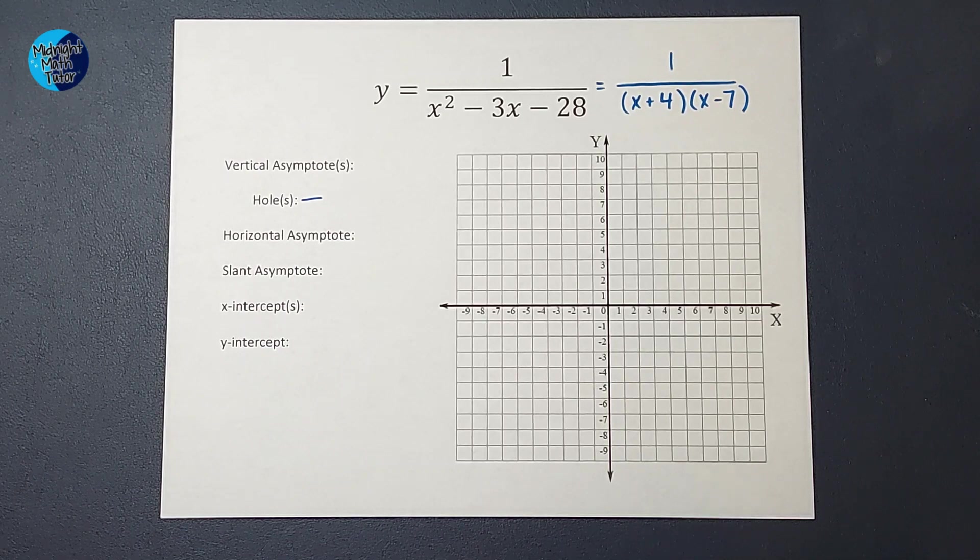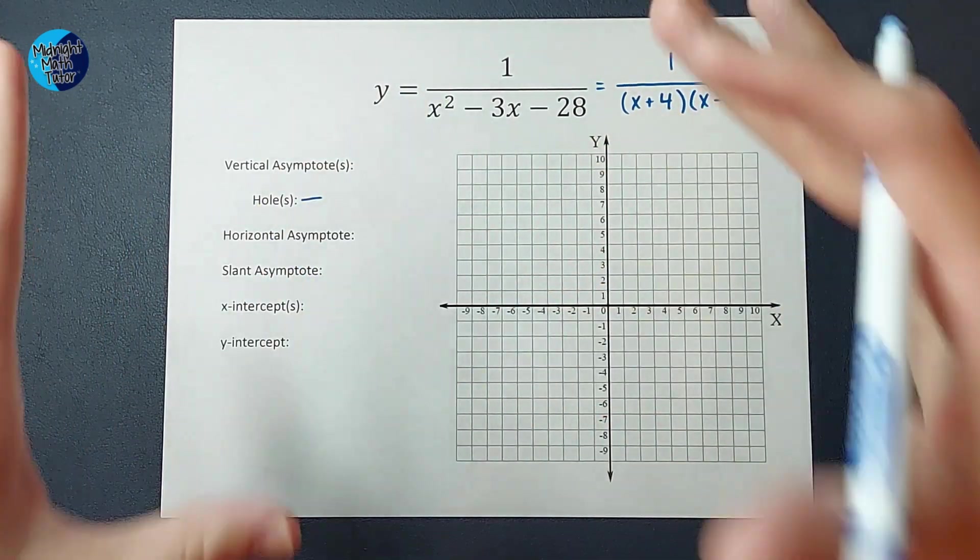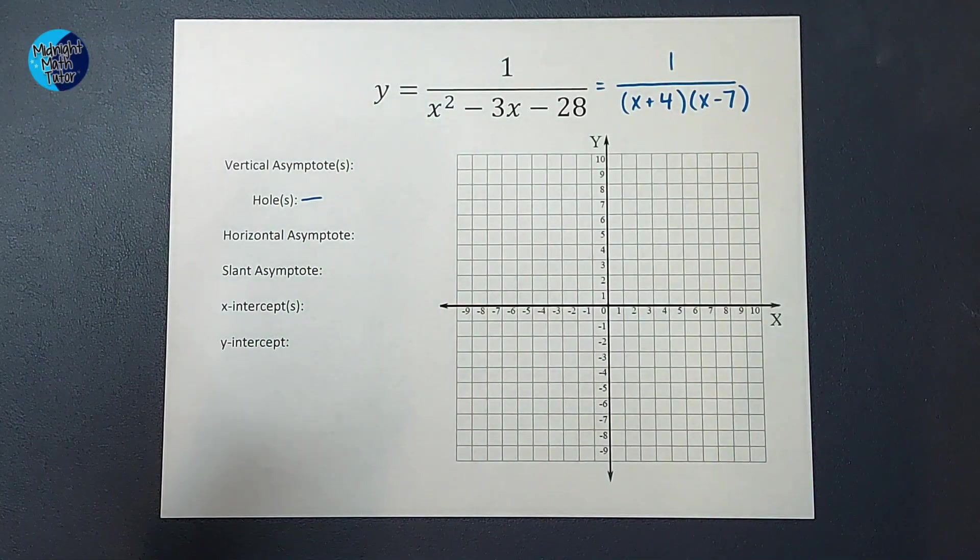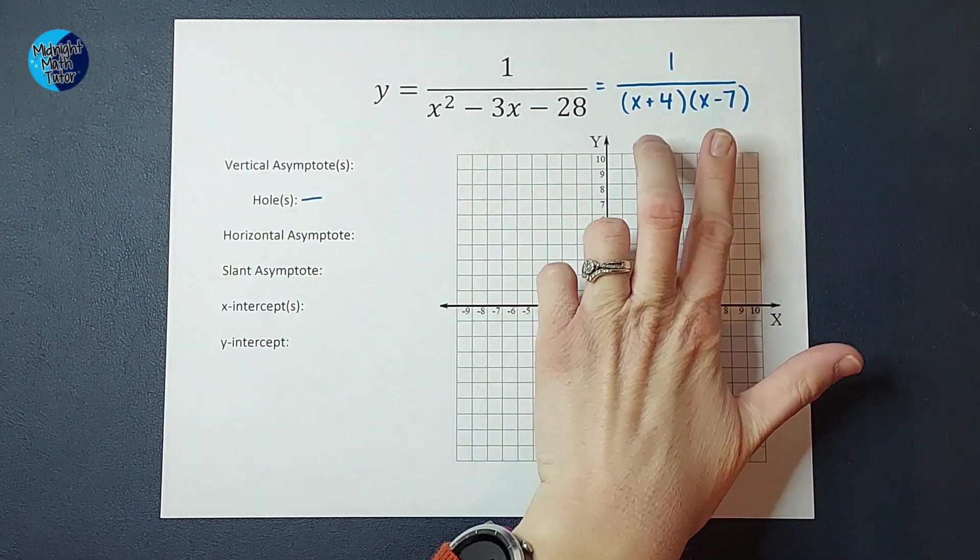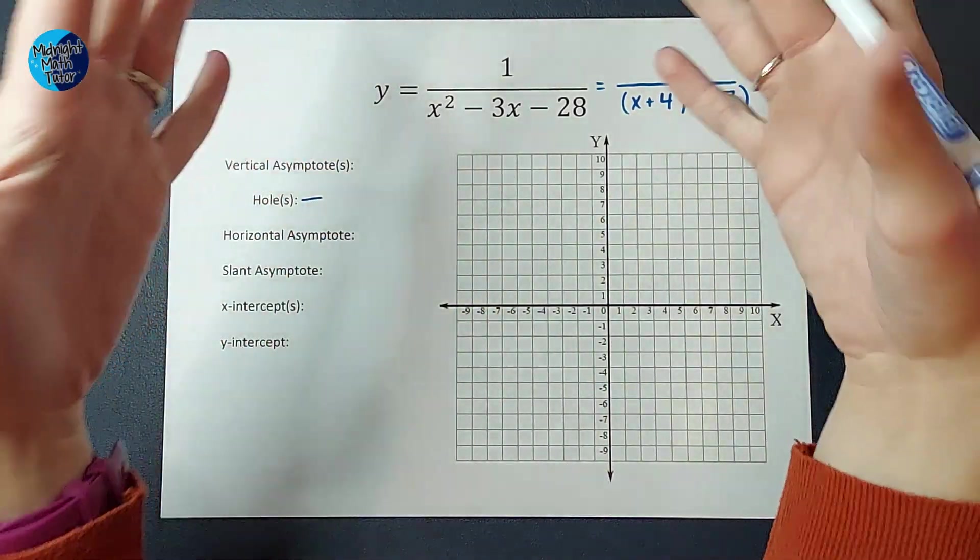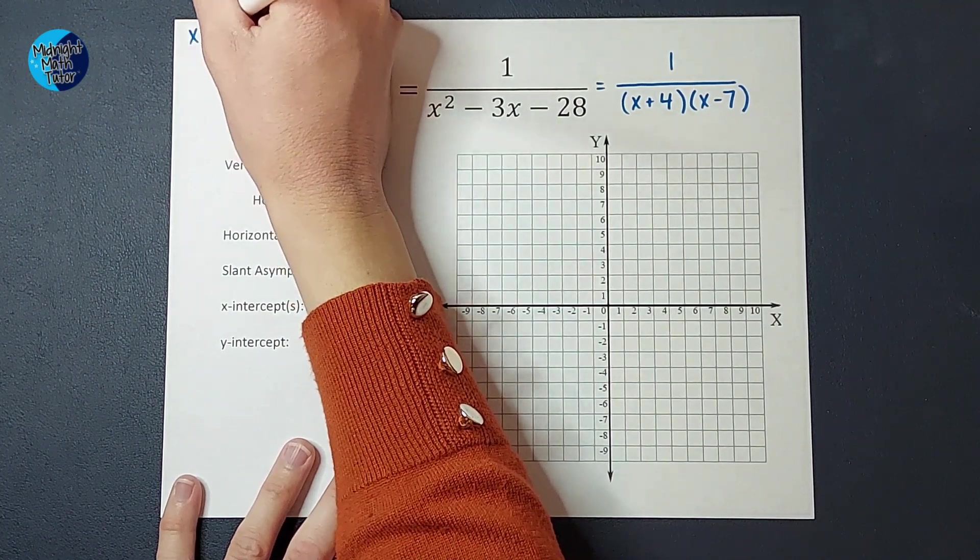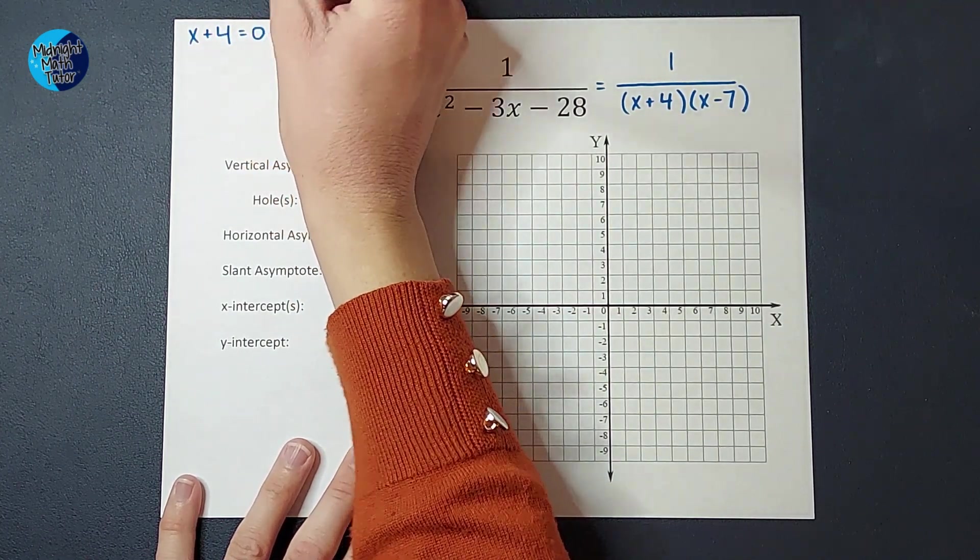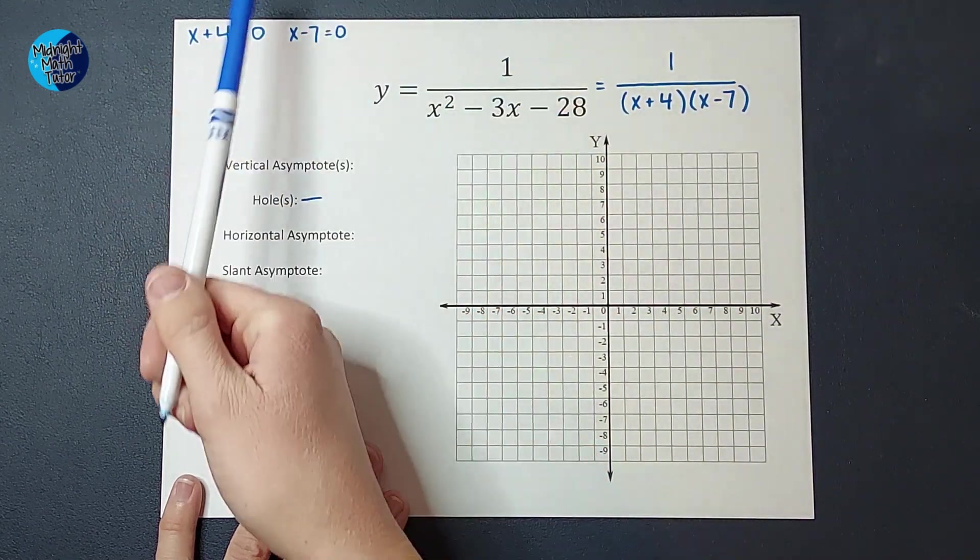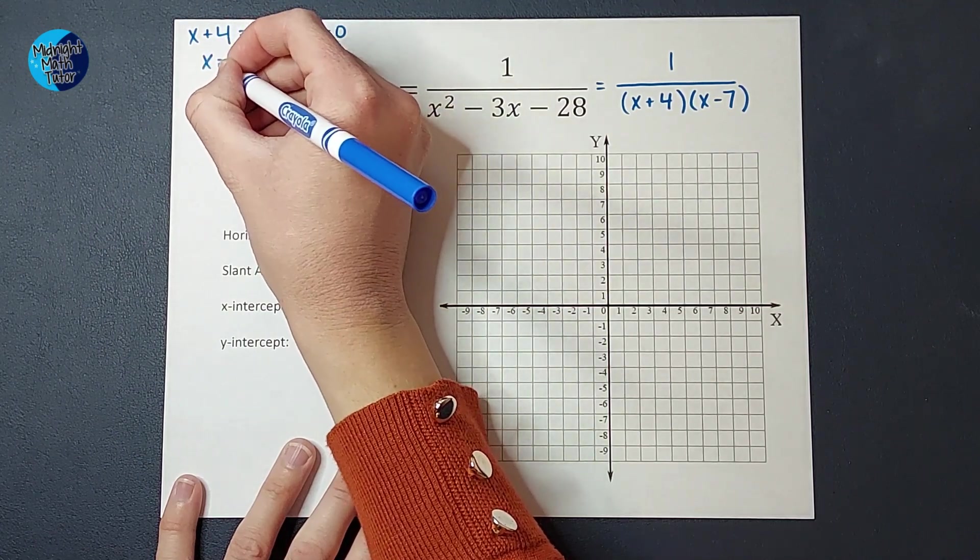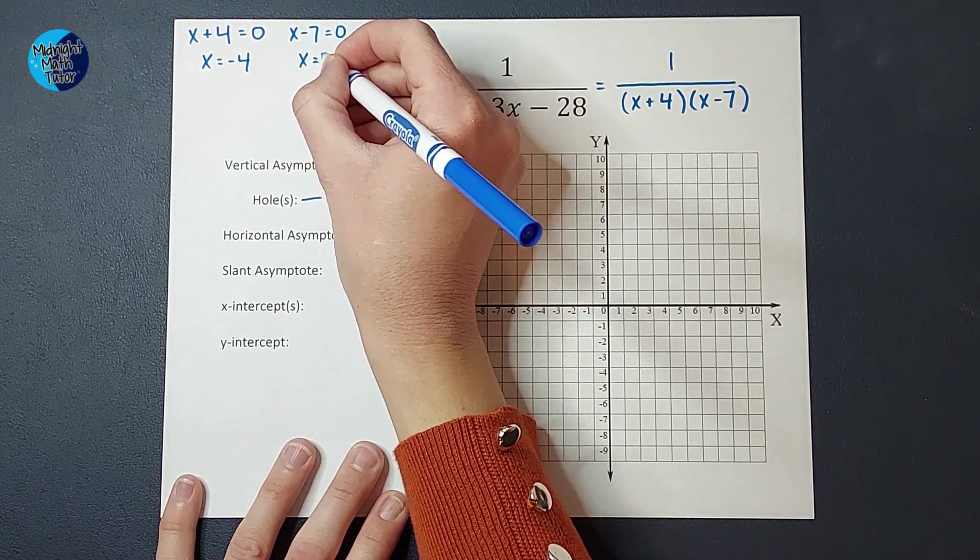Next thing we're going to look for is our vertical asymptotes. These are formed where your denominator could be equal to 0. We do not even mess with 0s in denominators. So to figure out your vertical asymptote, we're going to set our denominator equal to 0 to see where we can't have our graph. So I'm going to have x plus 4 equals 0, and x minus 7 equals 0. So I would subtract 4 from both sides and get x equals negative 4, and add 7 to both sides to get x equals 7.